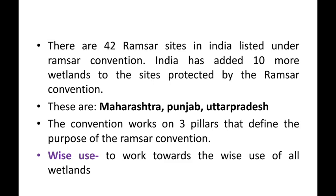As of the records, India had 42 Ramsar sites identified, but later 10 more Ramsar sites were added and included in the Ramsar Convention, bringing the total to 52 Ramsar sites identified in India. These are mainly located in Maharashtra, Punjab, and Uttarakhand.